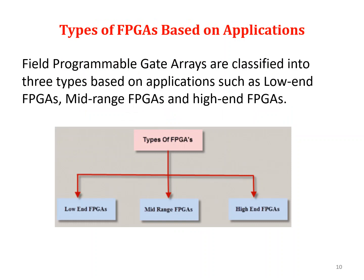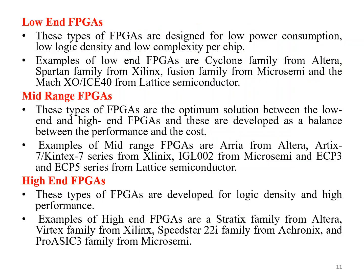The types of FPGAs can be classified based on applications into three kinds: low-end FPGA, mid-range FPGA, and high-end FPGA. Low-end FPGAs are designed for low power consumption, low logic density, and low complexity. Examples include the Cyclone family from Intel, the Spartan family from Xilinx, the Fusion family from Micro Semi, and the MACh from Lattice Semiconductor. Depending on the need, we can purchase low-end, mid-range, or high-end FPGAs, with cost varying across each range.